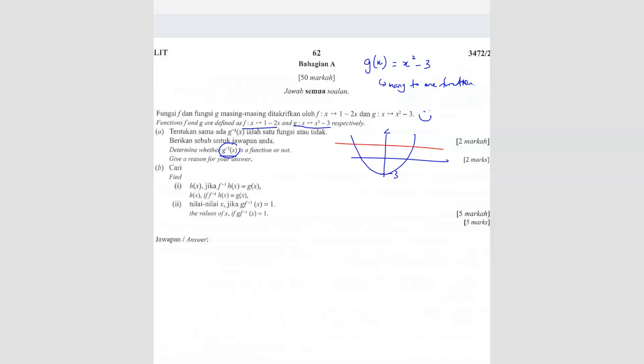If you use a horizontal line test, you cut more than one point. From here itself, you should know it's a many to one function. Because it cuts more than once, there is no inverse. That means this g inverse doesn't exist.